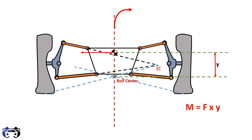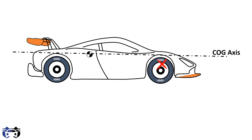The roll center is at distance y from the center of gravity. When the vehicle steers it produces a lateral force F at the CG, causing a roll moment M = F × y. If the distance between the roll center and CG increases, the tendency to roll increases, and vice versa. Note this is an instantaneous roll center — its position changes as the suspension geometry changes during vehicle handling. Since the front and rear suspensions have different roll centers, the axis passing through the front and rear roll centers is called the roll axis, which is the instantaneous axis about which the vehicle rolls.